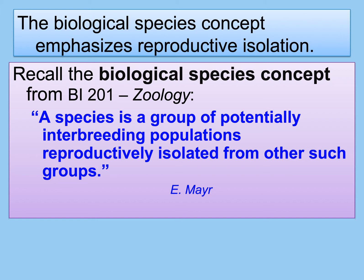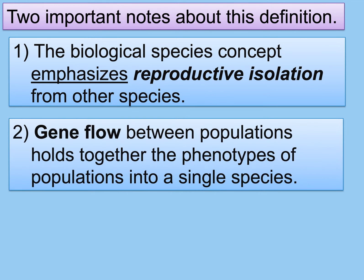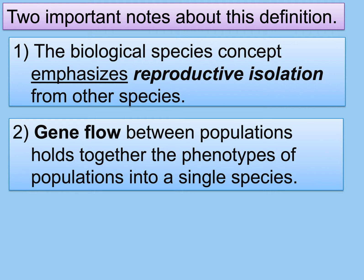A word of caution: biology is fuzzy. Biology regularly shows us things that don't clearly fall into one category or another. We looked at fossils that were intermediate mosaics — Archaeopteryx, Sinosauropteryx, Tiktaalik with traits of both tetrapods and fish. So when we say a species is reproductively isolated from other groups — what if sometimes there's interbreeding? Just how much reproductive isolation is required? Does it have to be absolute, or can there be a little?